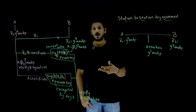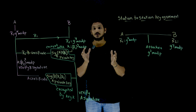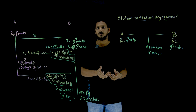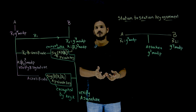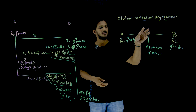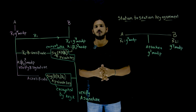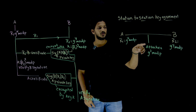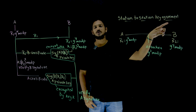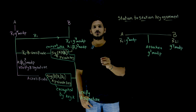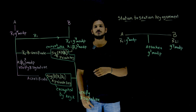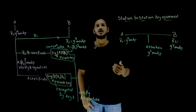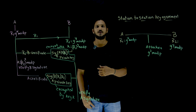This is how station-to-station key agreement provides authentication — confirming that the message came from A and the message came from B. By using that authentication, the man-in-the-middle attack can be overcome. Hope you understand. If you have any questions, please post them in the comment section below. Thanks for watching. If you haven't subscribed to our channel, please subscribe and press the bell icon for the latest updates. Thank you.